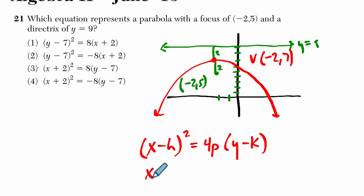So we plug in what we know. The vertex, x minus negative 2, or plus 2, equals 4 times p. p is 2, so 8. And then y minus k, which is 7. And that's our equation, which I think we see right here in choice 4.